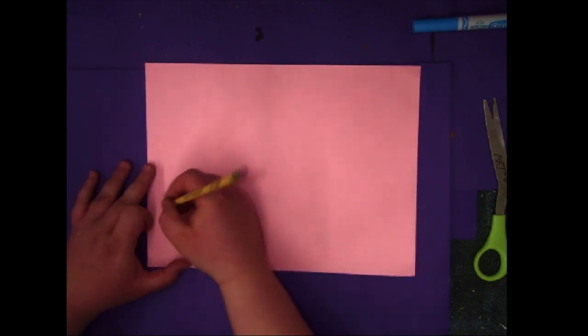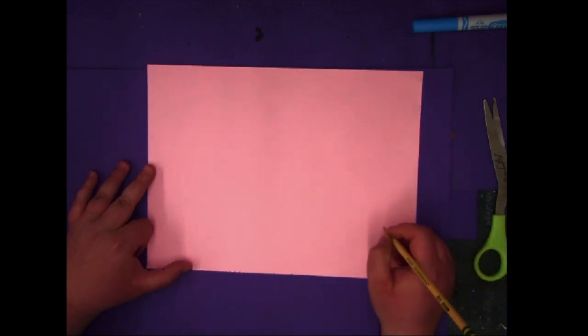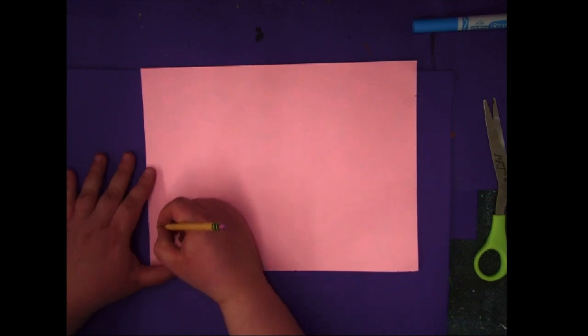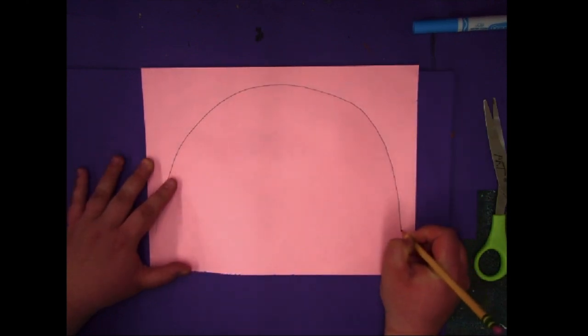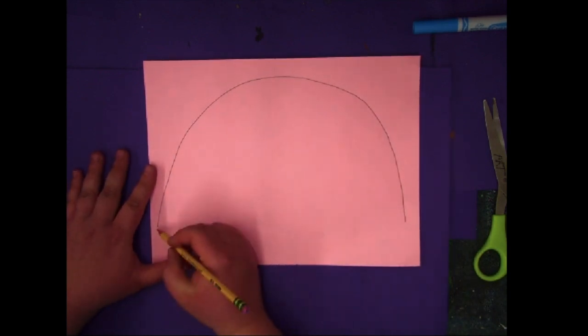All right, so what I'm going to do is I'm going to make like a really big rainbow line. So I'm going to go all the way across the paper. I'm going to start over here and then I'm going to go up and then back down, kind of like that. And that's going to be kind of like the head of the jellyfish.